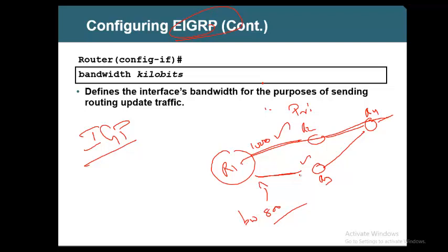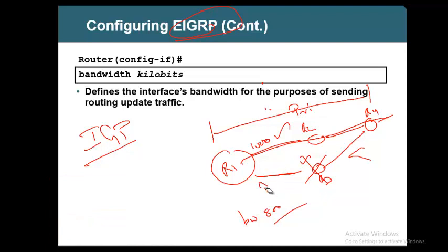FD and successor are the same if there is only one path — if I don't have an alternate path, FD and successor will be the same. Succession means the chosen one. But here, you have two paths — both paths have got an FD. So how can both be successors? When the bandwidth is only 800 on one path, the one with the lowest FD becomes the successor. More bandwidth means lower FD.